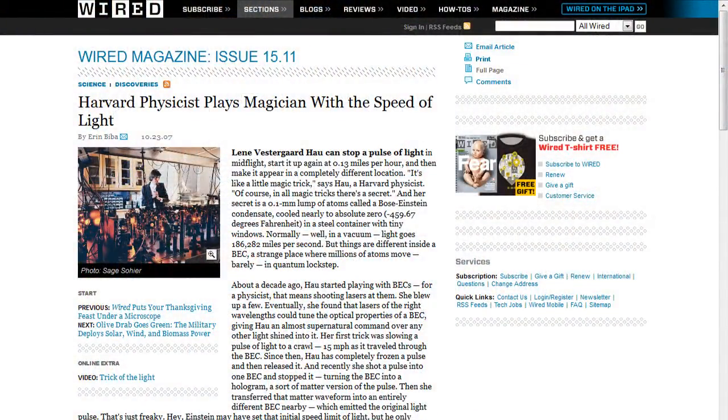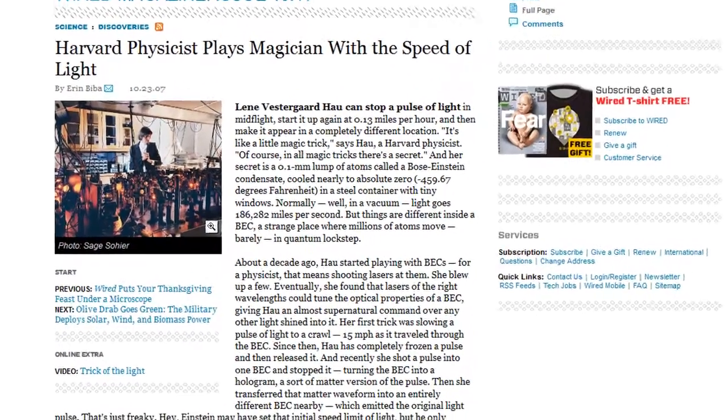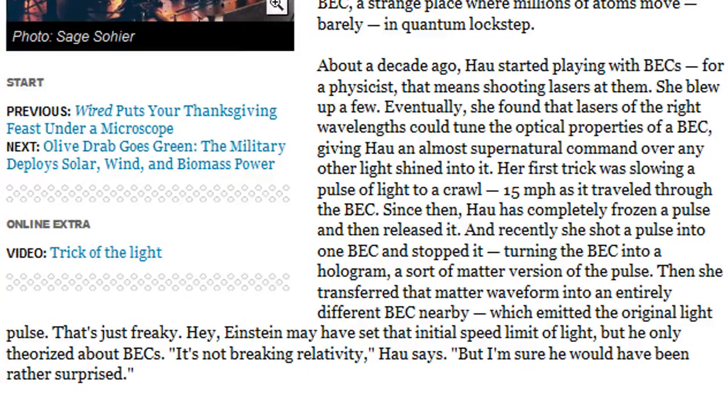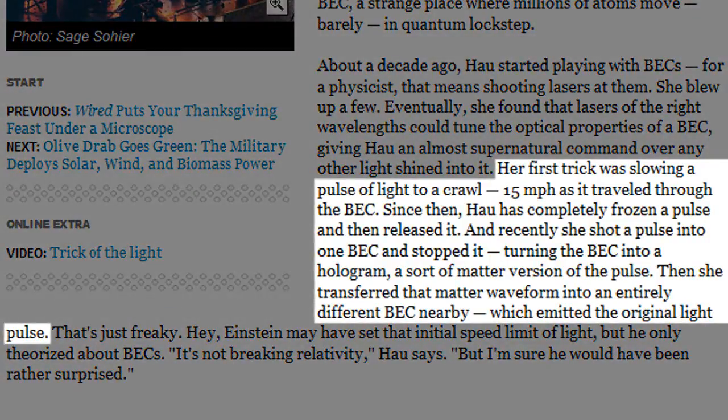This is the article Sean referenced. Incredibly, he claims that the speed of light was increased in this research, yet the article clearly indicates that they only slowed it down. Her first trick was slowing a pulse of light to a crawl, 15 miles per hour as it traveled through a Bose-Einstein condensate. Since then, Hau has completely frozen a pulse and then released it.